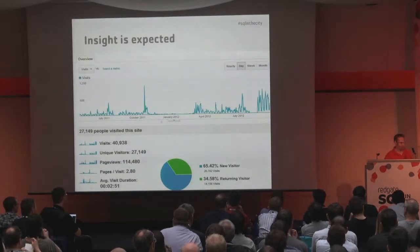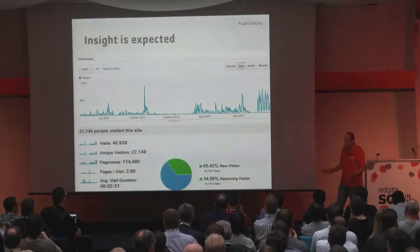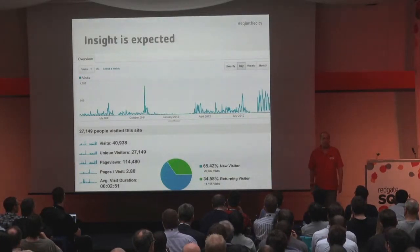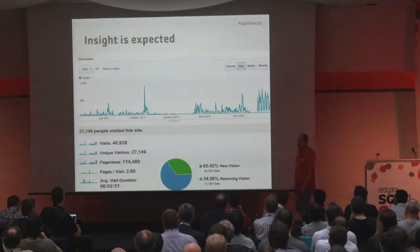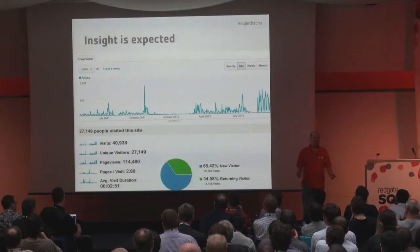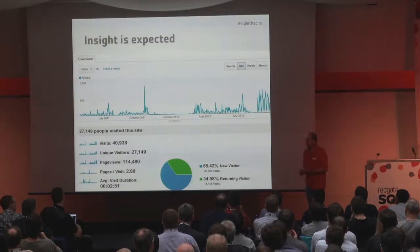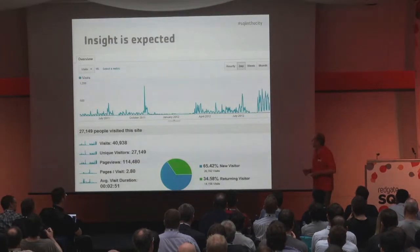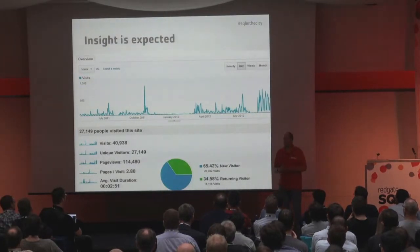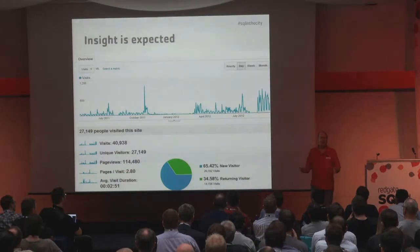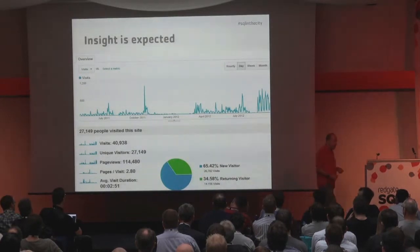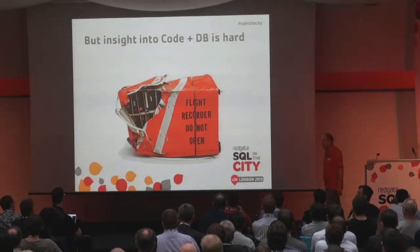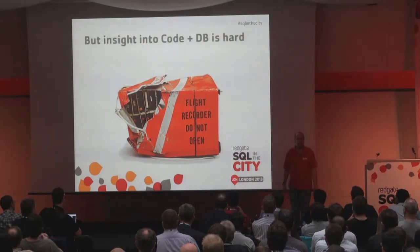We live in a world where people expect to have insight into anything they want. Whenever anything happens you can find out about it immediately — Google, Twitter, Facebook. We've got this expectation that we can find the data we need. But the reality is that when we think about code and databases, it's quite difficult to understand what our code and databases are doing in production. How many of you have had a customer tell you that you've got a problem with your software or database? How many have been told by your boss that things aren't working?